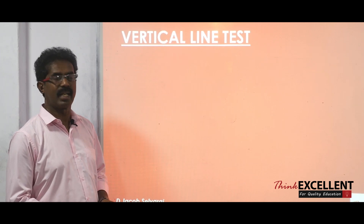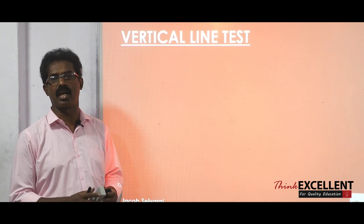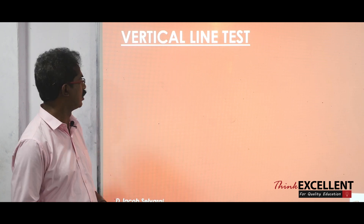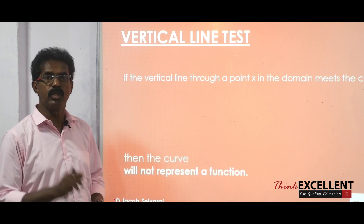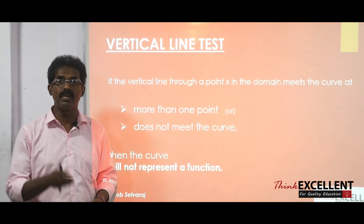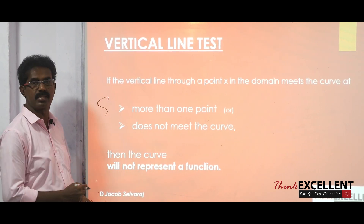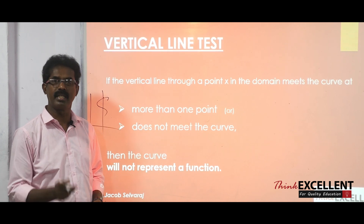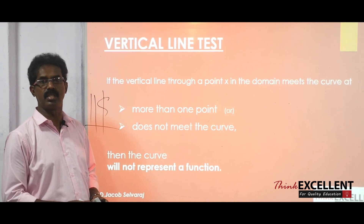There is a test called the vertical line test. What is the use of the vertical line test? You can check whether the given graph represents a function or not. You draw vertical lines. In two cases, we say it is not a function. First, if the vertical line cuts the curve at more than one place, it is not a function. Second, if the vertical line does not meet the curve at all, we also say it is not a function.